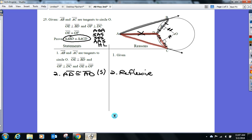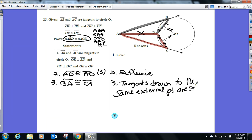What's congruent? BA. Okay, that's true. I'll help you out with the reason now. BA is congruent to CA. What are those segments called? Tangents. Where are they drawn to? I'm going to add a little word here because that point's on the outside. External point. Tangents drawn to the same external point are congruent.